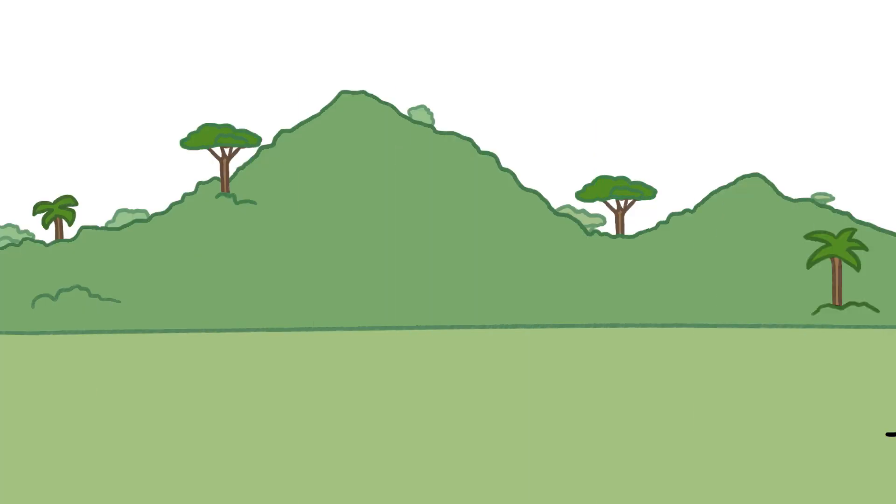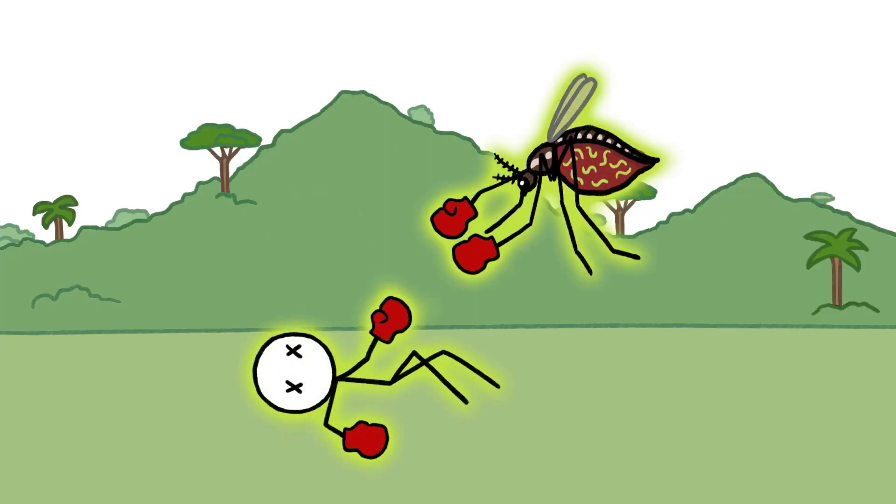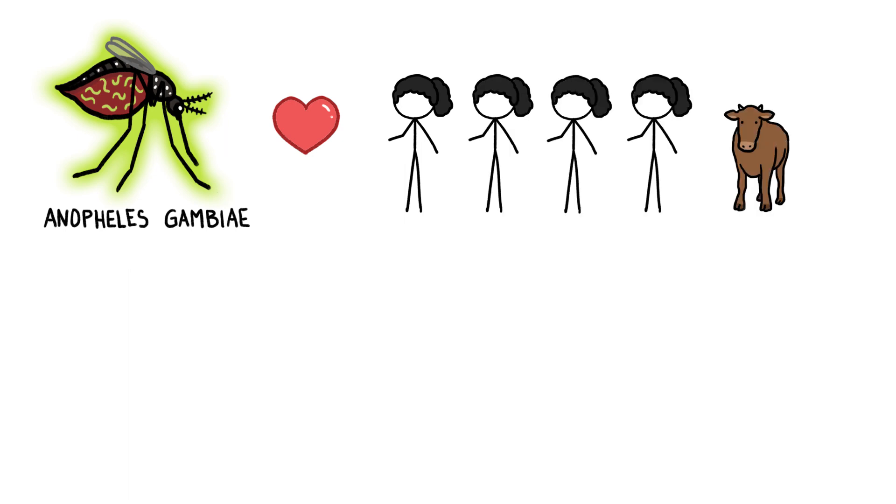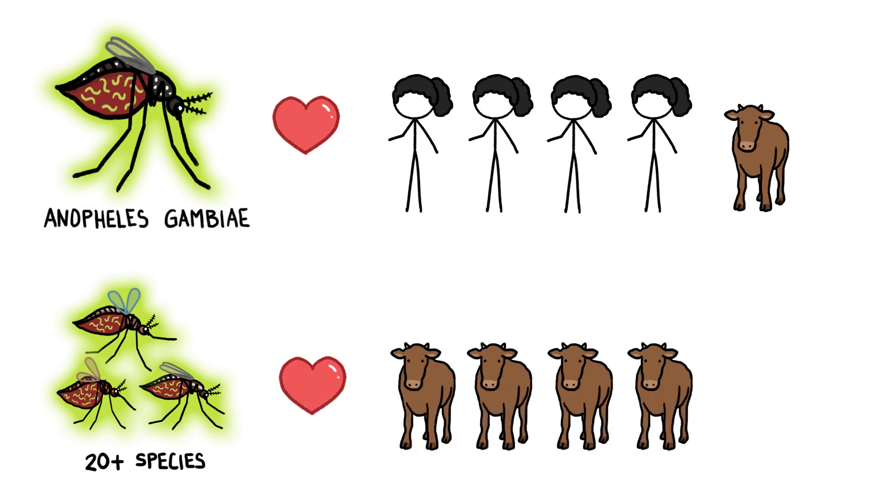But in Africa, malaria has been especially hard to fight. And that's largely because the main mosquito that transmits malaria in Africa loves humans. It bites our species four times more often than it bites other animals, whereas malaria-carrying mosquitoes outside of Africa bite other animals more often than they bite us.